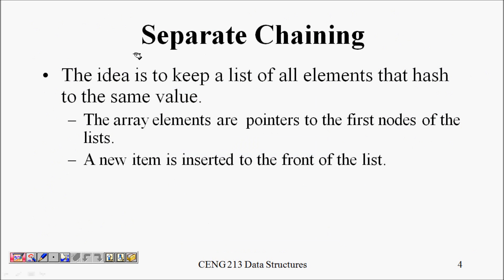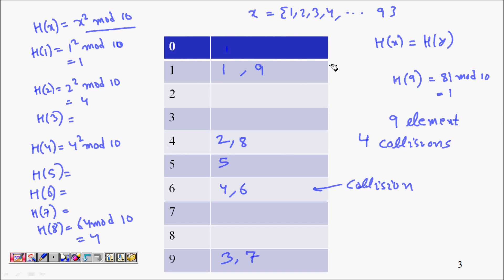The first idea is known as separate chaining. The idea is to keep a list of all elements that hash to the same value. We will keep a linked list of all elements that hash to the same cell.